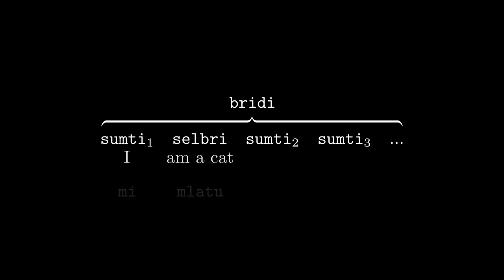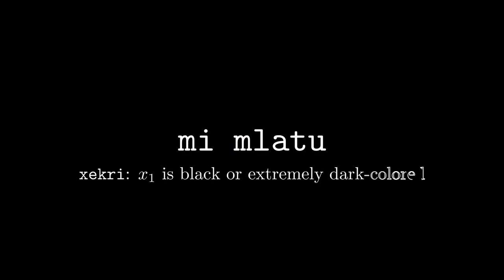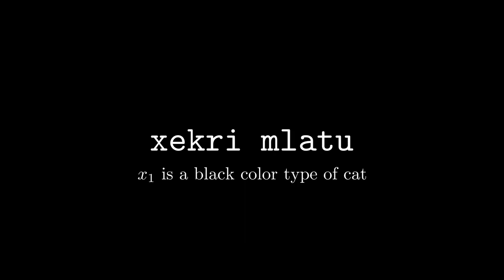The word for 'I' in Lojban is not a relation word — it's a prosumti, meaning it stands in for a sumti. The word for I is mi. So we can put together our first full bridi: mi mlatu. Now let's modify the selbri. The word for black, as in the color, is ckaji, meaning x1 is black or extremely dark colored. So you can guess what mi ckaji mlatu means. Ckaji mlatu is the selbri here, and it means x1 is a black-color type of cat. Lojban is not semantically unambiguous — you can always use circumlocution to make meaning clearer, as in 'I am a cat which is black colored.'